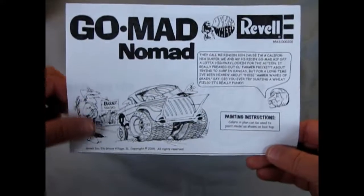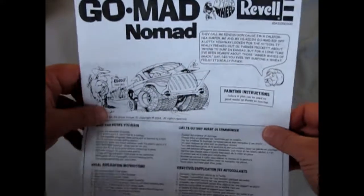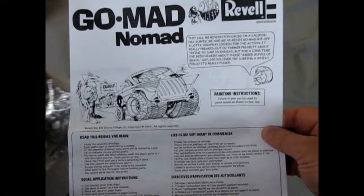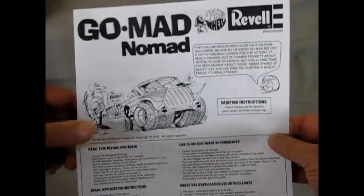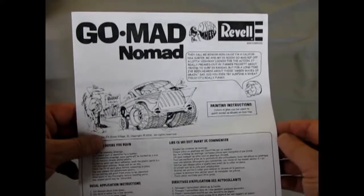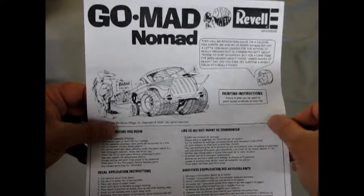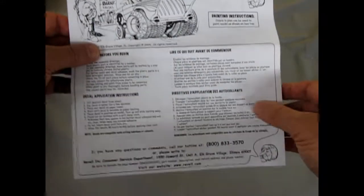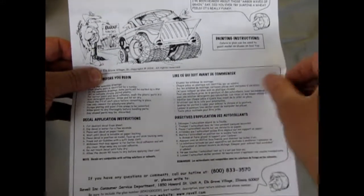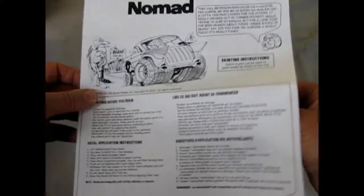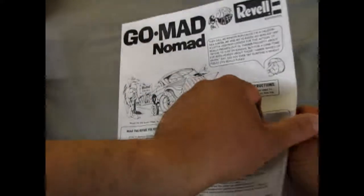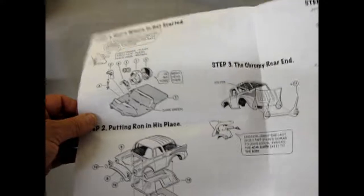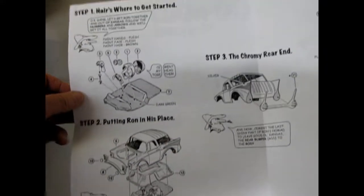So what's cool about the Go Mad Nomad is that it includes this cartooned instruction sheet, of course drawn up by the master himself, Mr. Dave Diehl. And it gives you what to do before you begin, a deco application written both in English and French, because this is an American model being sold into Canada.